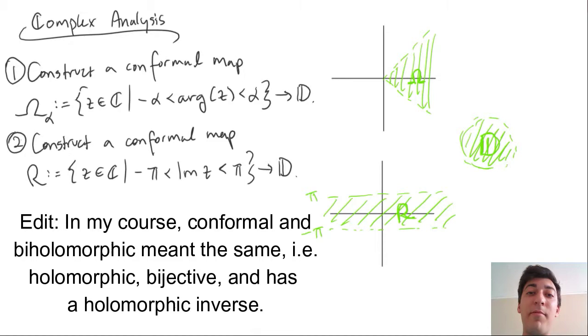Welcome back to another problem in complex analysis. Today, we're going to be dealing with something called conformal mapping. Conformal maps are very useful not only in complex analysis, but also in the real world. I'm not an applied mathematician, but I understand that there are some very important applications in data analytics and even optics.